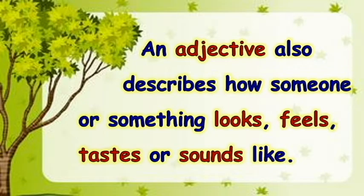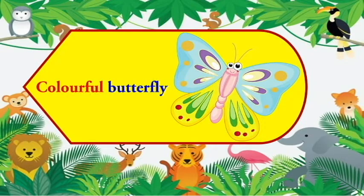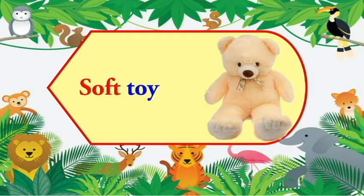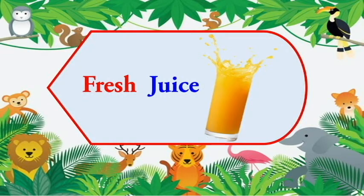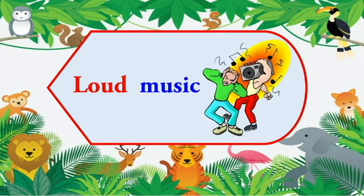Here are some examples. Colorful butterfly — here colorful is the adjective. Soft toy — in this example, soft is the adjective. Fresh juice — here fresh is the adjective. Loud music — here loud is the adjective.